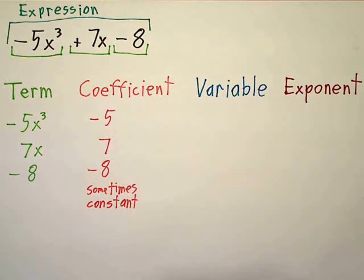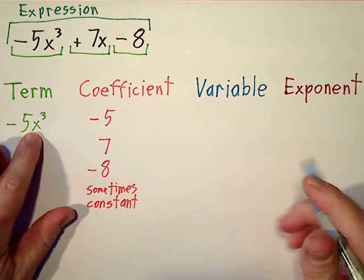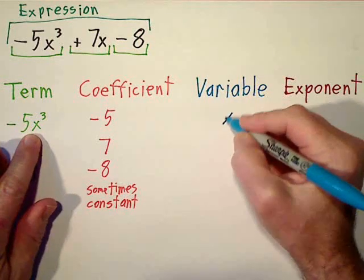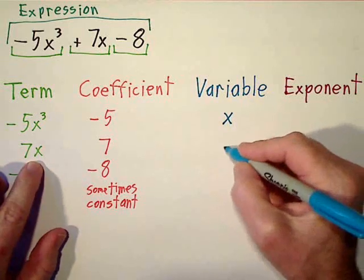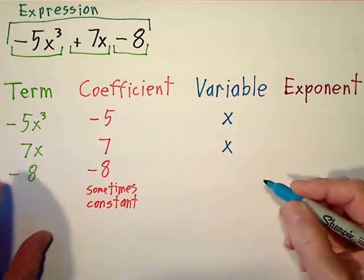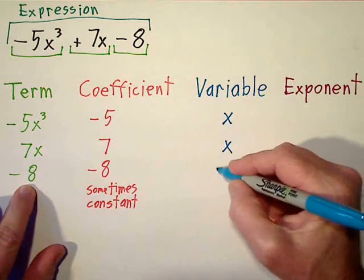The variables. For our first term the variable is x. For the second term the variable is x, and for the third term we have none.